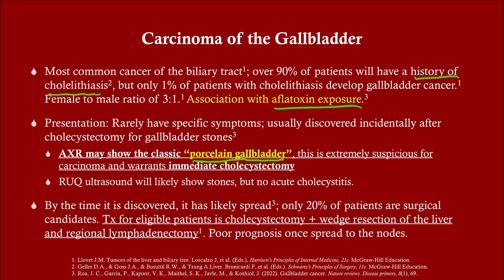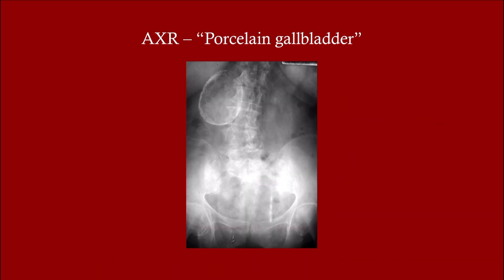By the time it's discovered, it's usually spread — only 20 percent of patients are surgical candidates. The treatment is to remove the gallbladder, and often we need to take some lymph nodes out — not only to remove the cancer if it's spread, but also to stage it.